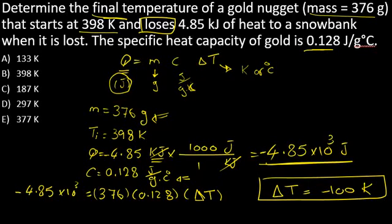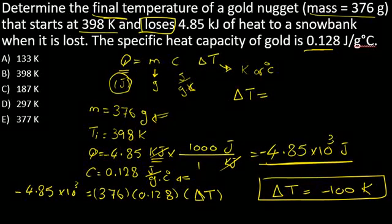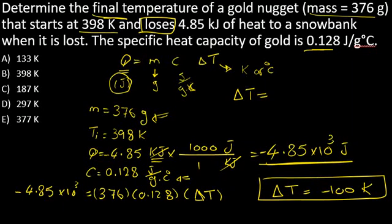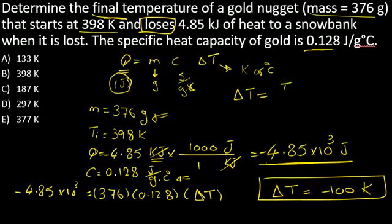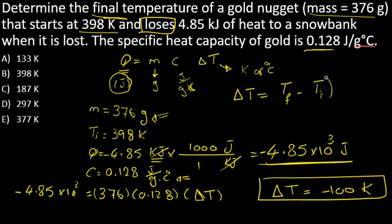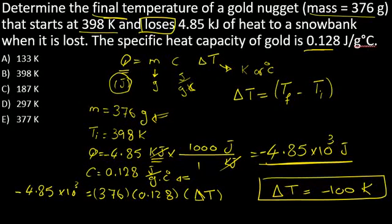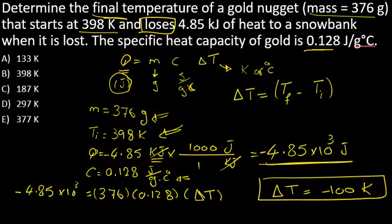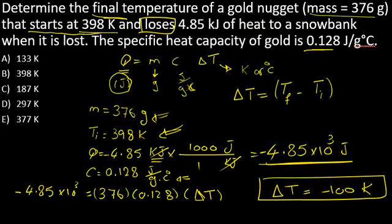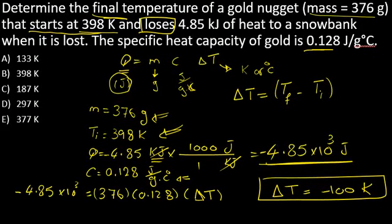What's ΔT? Any delta—the change of anything—is usually the final minus initial. So T final minus T initial equals ΔT. Do I have the initial? Yes, it's 398. Do I have ΔT? Yes, it's -100.